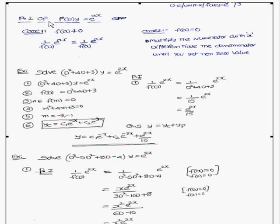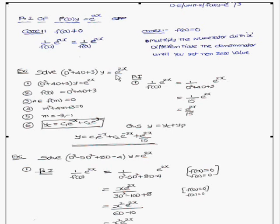Today we are going to discuss the problems of f(D)y = e^(ax). Consider the example: (D² + 4D + 3)y = e^(2x). That means the right hand side has a function. We are going to discuss how to find the particular integral when the right hand side is e^(ax).